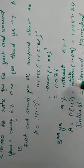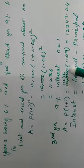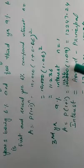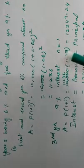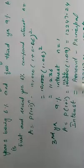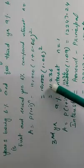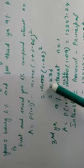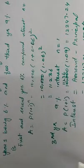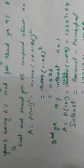Compound interest = Amount − Principal. The principal is ₹10,000. We calculate: 10,000 into the appropriate rate factors raised to the required power (whole cube for 3 years). So we compute 10,000 × (1 + r₁) × (1 + r₂) × (1 + r₃) and then subtract the principal to get compound interest.